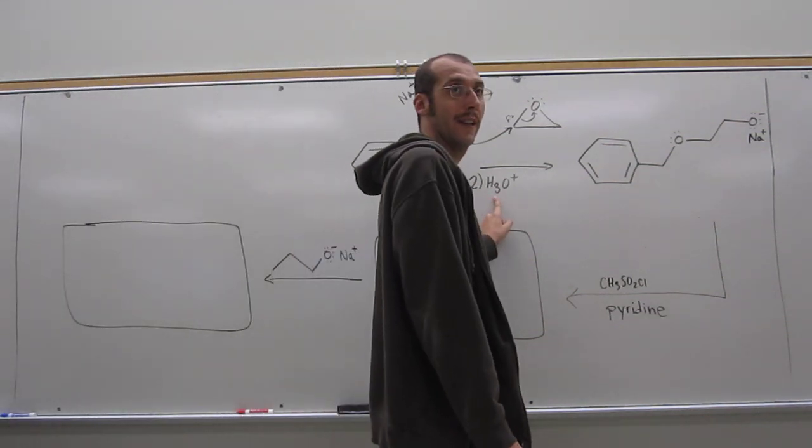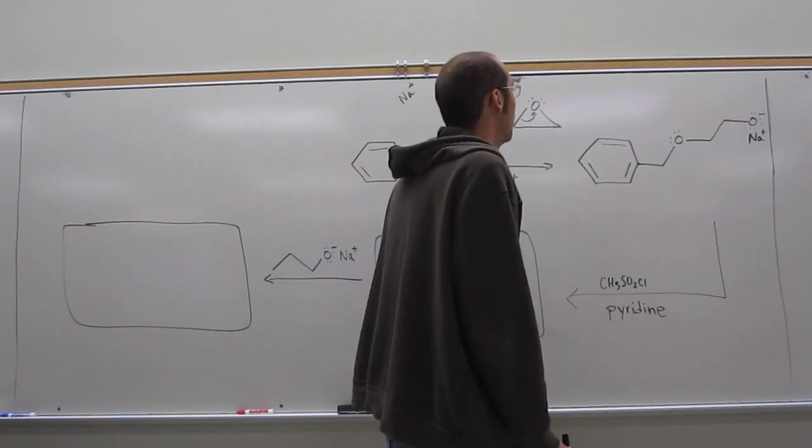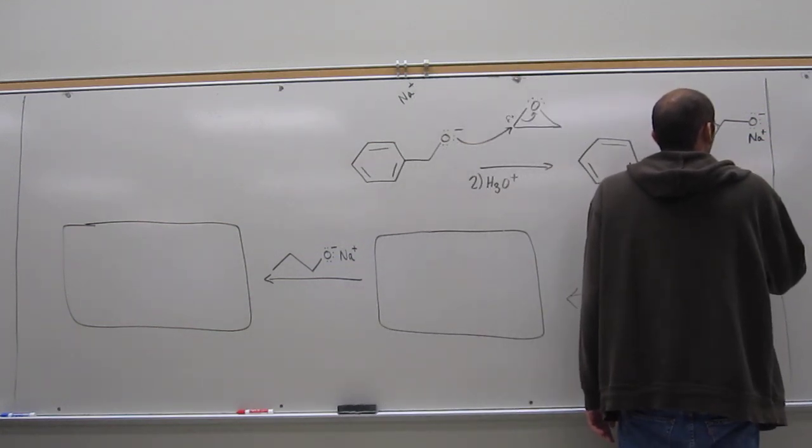So when we do that, what do we get? How many carbons are we adding to this side of it? Two. Two plus the oxygen. So one, two, oxygen. And the oxygen, does it have a charge on it? Negative. Yes. Negative charge. So the sodium is still associated there. Does that make sense? So that's what we've got. But we haven't put our acid in there yet. What's going to happen when we do that? Protonate that. Of course.